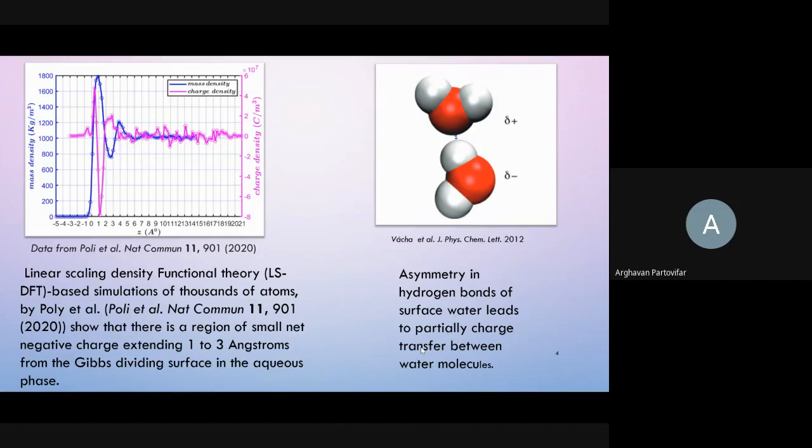The volumetric electric charge profile at the air-water interface is obtained from Poli et al. linear scaling density functional theory based simulations. They use Willard and Chandler formulation to obtain the charge profile which defines the instantaneous density fluctuation of the interface. This profile shows that there is a substantial negative charge density in approximately two angstroms from the Gibbs dividing surface in the water phase. It is notable that Gibbs dividing surface is where mass density reaches to its half value.